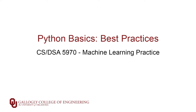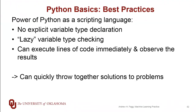Let's talk a little bit about best practices for Python before we're done here. Python as a scripting language really does bring a lot of power to the table. In particular, you don't have to explicitly declare variable types — type checking is done in a lazy way; it happens at runtime. This can be a good thing, but it can also get you into trouble, especially if you start switching the types of variables declared within your code.